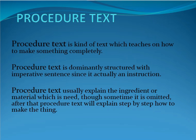Procedure text usually explains the ingredients or materials which are needed — sometimes it is omitted. After that, procedure text will explain step by step how to make the thing. Biasanya menerangkan bahan-bahan dan material yang dibutuhkan, walaupun kadang-kadang itu dihilangkan. Setelah itu procedure text akan menerangkan secara tahap demi tahap bagaimana membuat sesuatu.